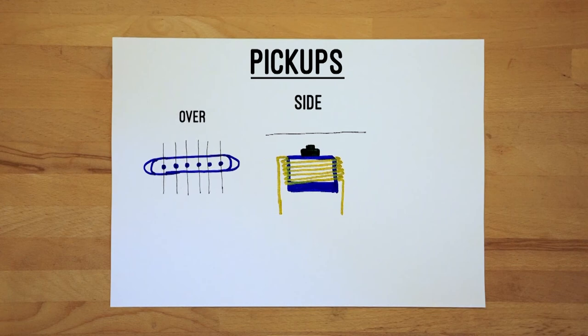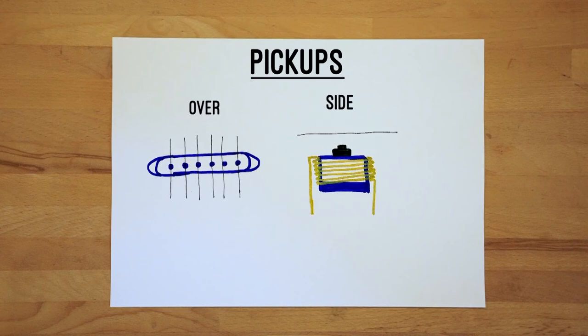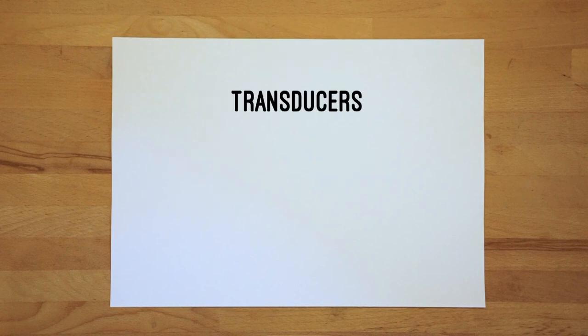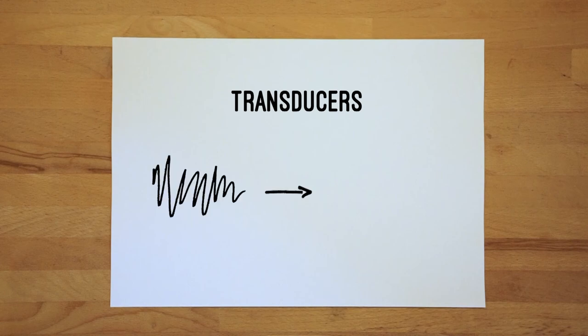Fun fact: this also means that a pickup works in a vacuum, unlike air vibration based microphones. So if the definition of a microphone is that it converts sound waves — acoustic energy — into an electric signal, a pickup is not a microphone. But both are transducers: a device that converts variations in a physical quantity, such as sound waves or brightness, into an electrical signal or vice versa.